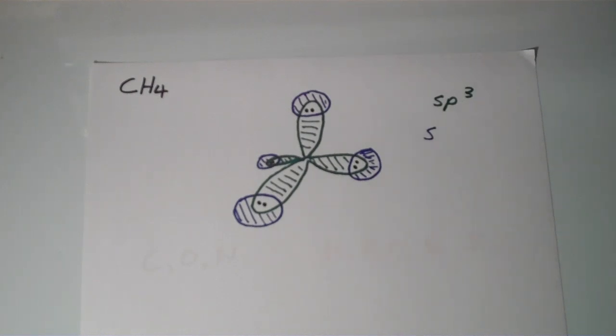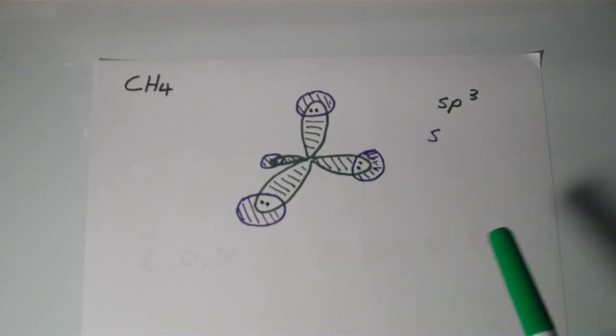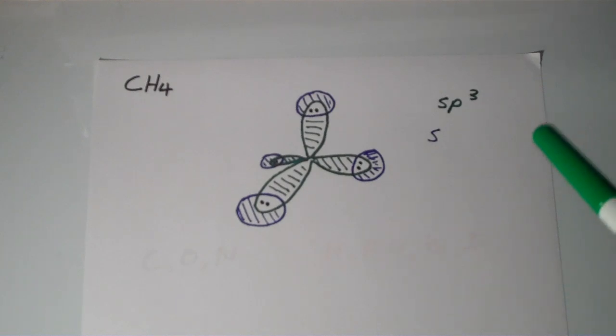Basically what we have here is we have these four sp3 orbitals, right? And then each of those sp3 orbitals overlaps with a 1s orbital of hydrogen. So the sp3 orbitals are shown in green and the s orbitals of hydrogen are shown in blue.